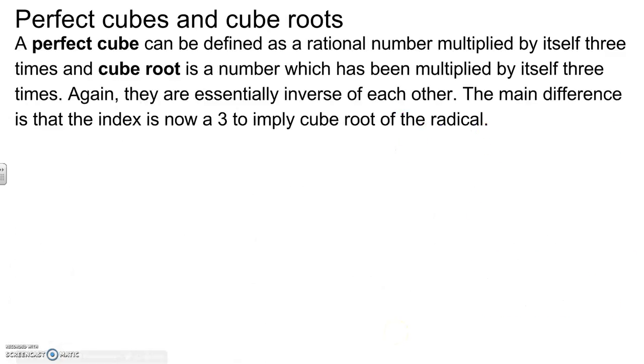Perfect cubes and cube roots. A perfect cube being defined is a rational number multiplied by itself three times. And a cube root is a number which has been multiplied by itself three times. So again, they are essentially inverse of each other.